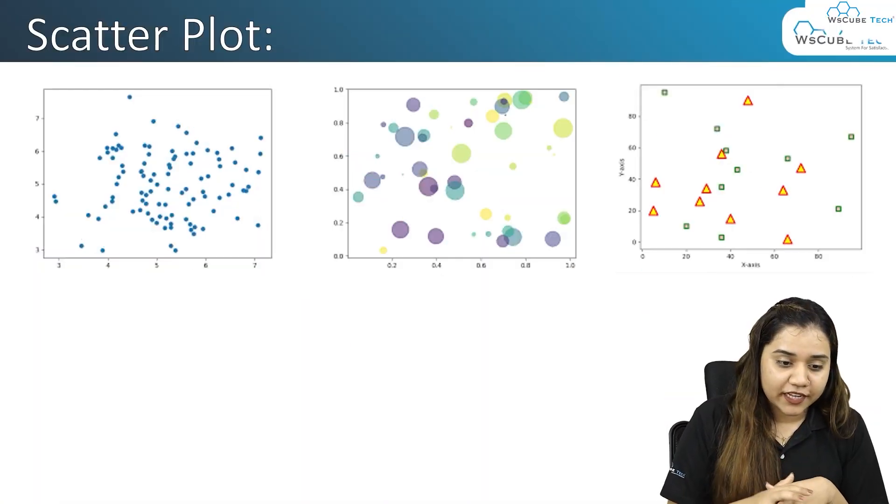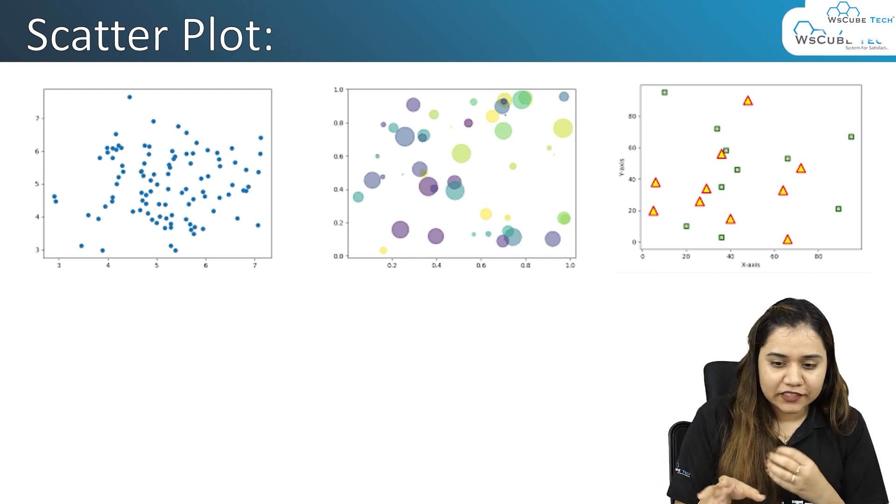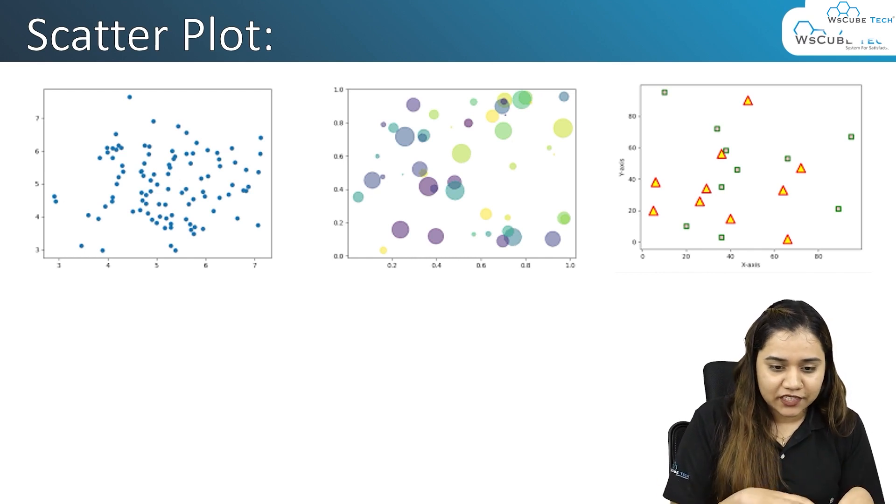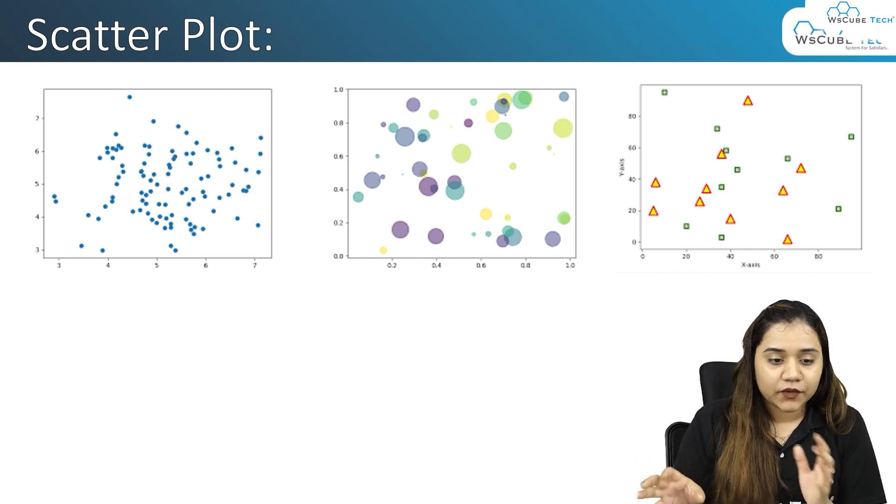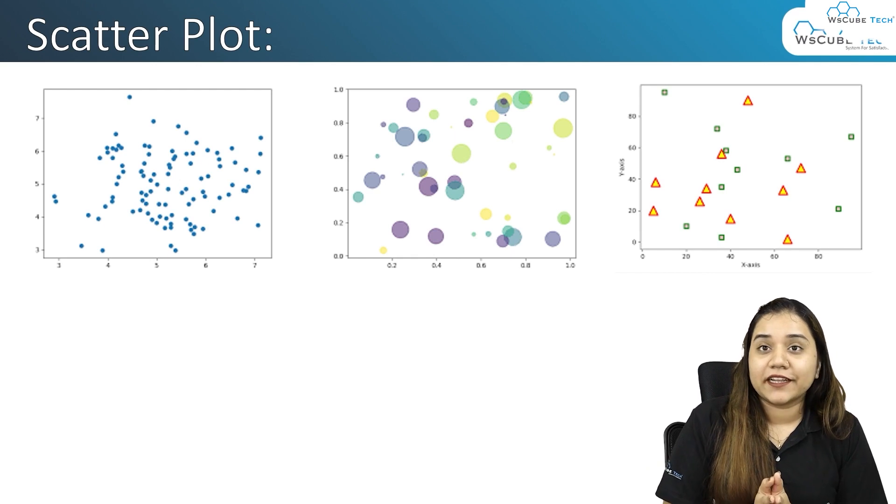In today's session we will be talking about scatter plots. A scatter plot is just like how the name says — 'scattered' — the data will be scattered throughout the plot along the x-axis and y-axis. This is how a scatter plot looks like — we have scattered data in different sizes, different shapes, and different colors.